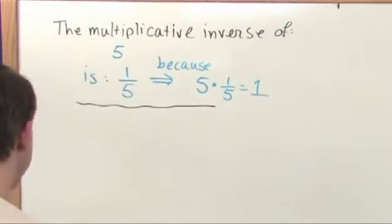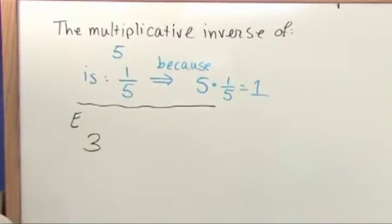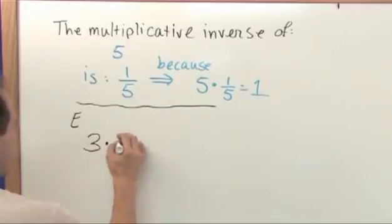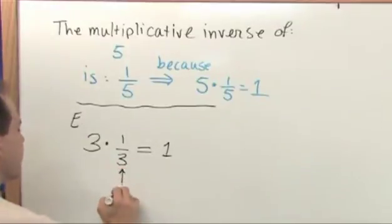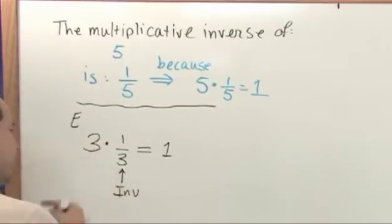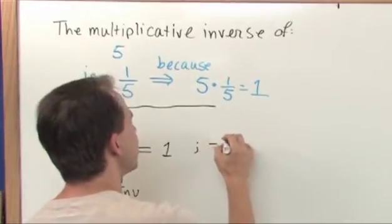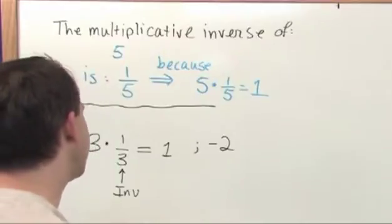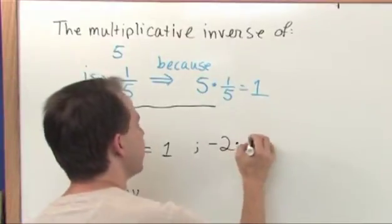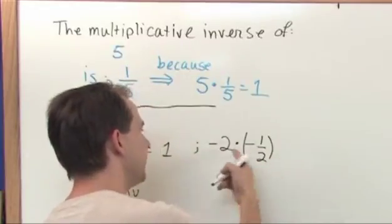So some more examples. The multiplicative inverse of the number 3 is 1/3, because when you multiply these things together you get 1. So this number here is called the inverse of the number 3, the multiplicative inverse of the number 3. Another example, just to deal with numbers because I like dealing with numbers: the multiplicative inverse of the number -2. What number can you multiply by -2 to give you a positive 1? Well, you have to multiply by -1/2. Negative times negative gives you positive.